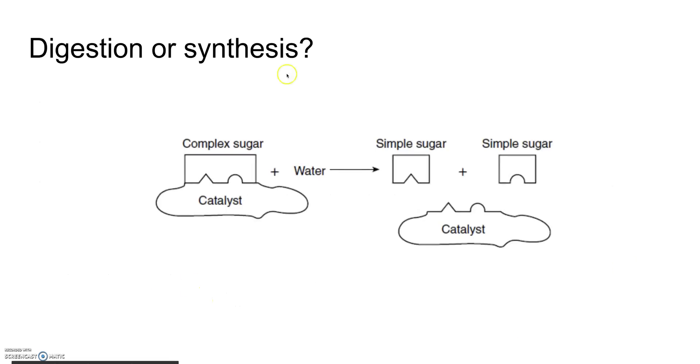For example, you're going to see something like this and this is a reaction happening. This is a sugar and remember that enzymes are lock and key. So this enzyme catalyst enzyme knew that it has to do something with this complex sugar because it fit perfectly. Now it started with this and it ended with this. So now we have two simpler sugars.